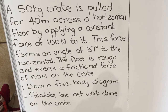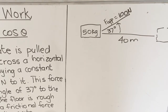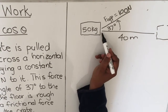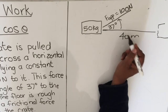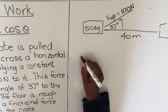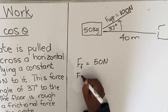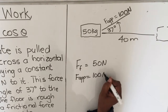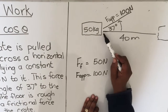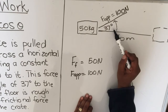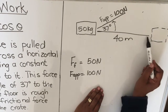The first question asks us to draw a free body diagram. Before drawing it, it helps to have your own sketch. Here is the 50 kilogram crate being pulled along for 40 meters. The floor is rough so it has friction — the frictional force is 50 newtons. The applied force is 100 newtons, but it's not pulled horizontally; it's pulled at an angle. That angle is 37 degrees — this is theta, the angle between the force and the horizontal displacement.